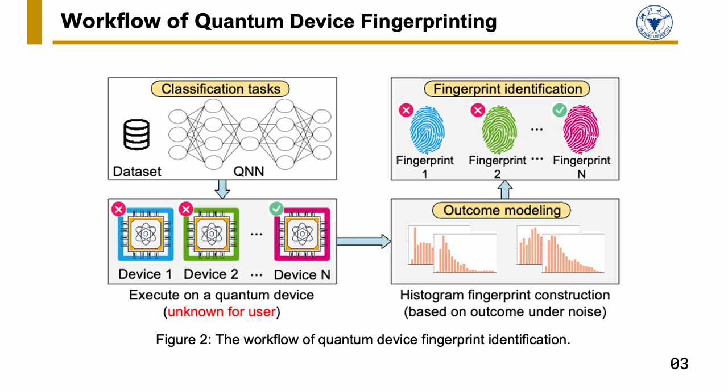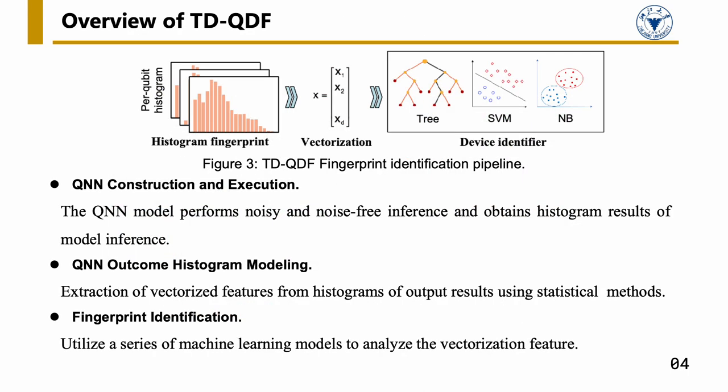The process involves three key technical steps. Firstly, QN in construction and execution. Secondly, QN in outcome histogram modeling. Lastly, fingerprint identification.